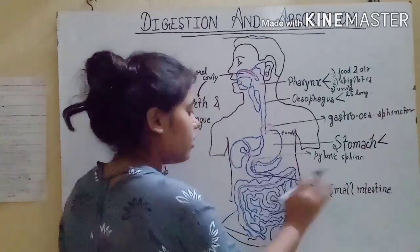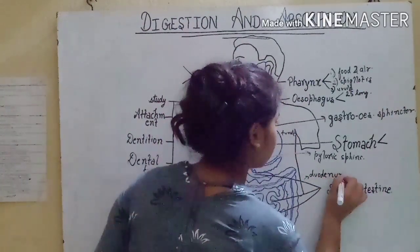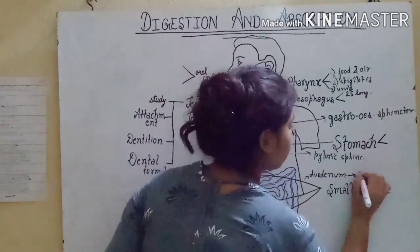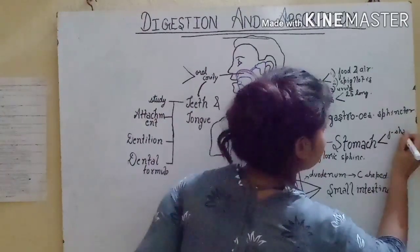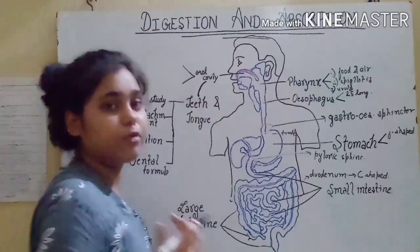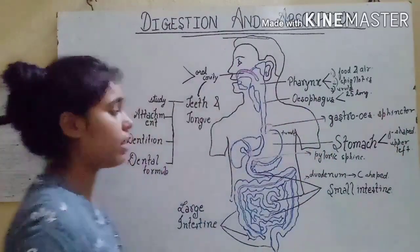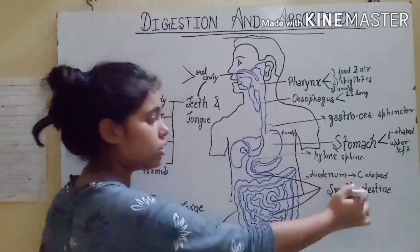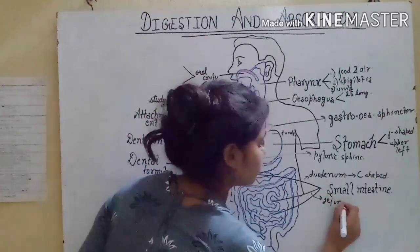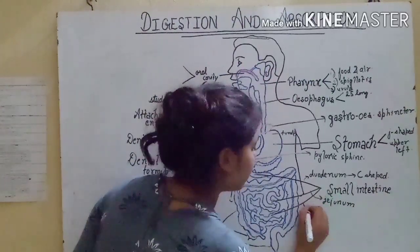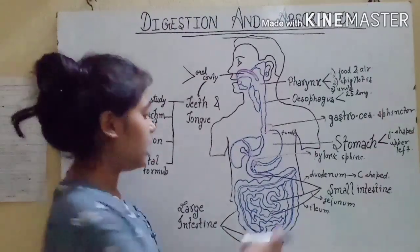The small intestine is divided into three parts. The first part is the duodenum, which is C-shaped. The stomach is J-shaped and is present near the upper left portion of the abdomen. The second part is the jejunum, and the third part of the small intestine is the ileum. Jejunum is a long coiled structure, while ileum is a highly coiled structure.